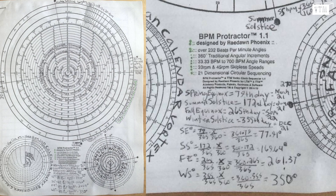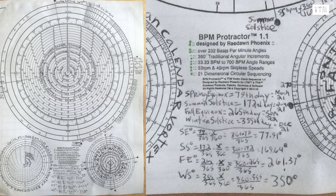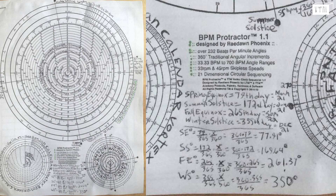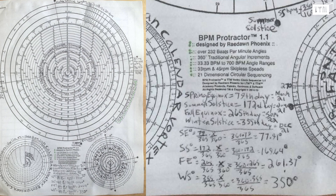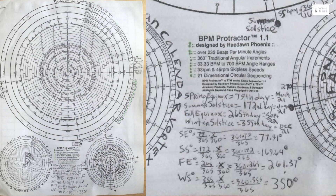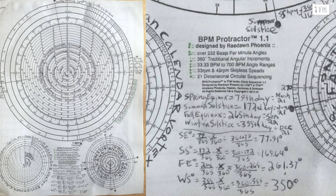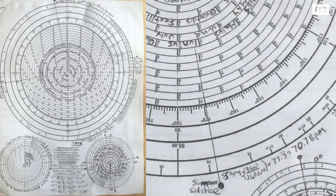Answer 2: To solve for the summer solstice that falls on the 172nd day, we apply the same equations. Summer solstice degrees equals 360 degrees times 172 days divided by 365 days, equals 169.64 degrees. Summer solstice BPM equals 360 degrees divided by 169.64 degrees, times 33.33, equals 70.7 BPM.